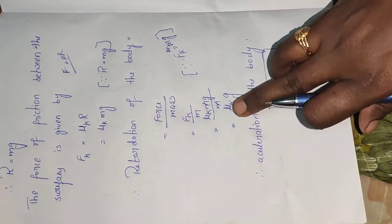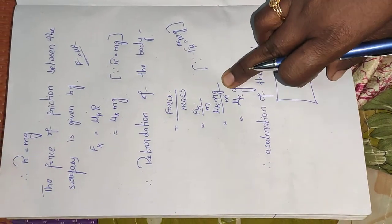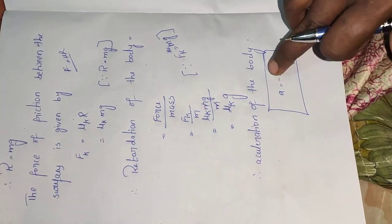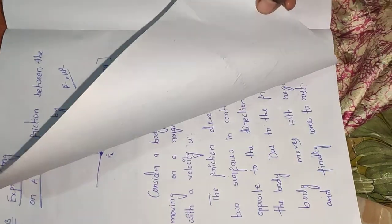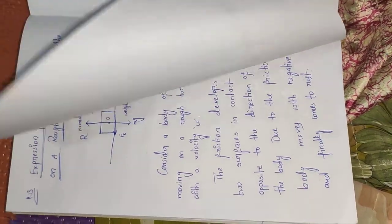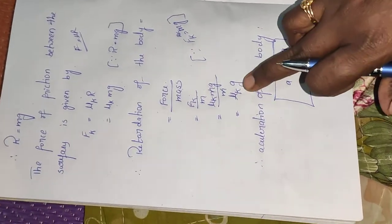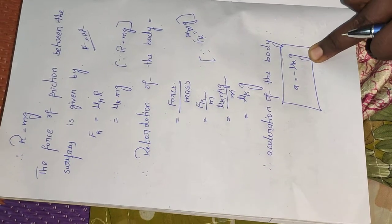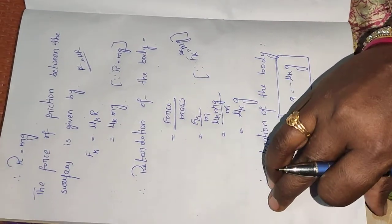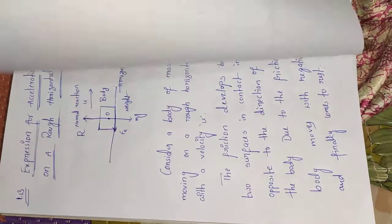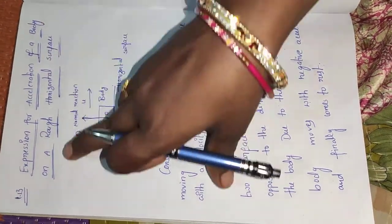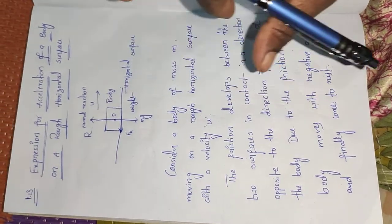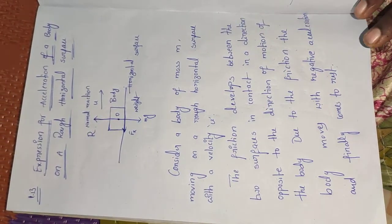Therefore, acceleration is Mu suffix K into G, but since it is negative acceleration, the acceleration of the body on a rough horizontal surface is A equal to minus Mu suffix K into G. Thank you.